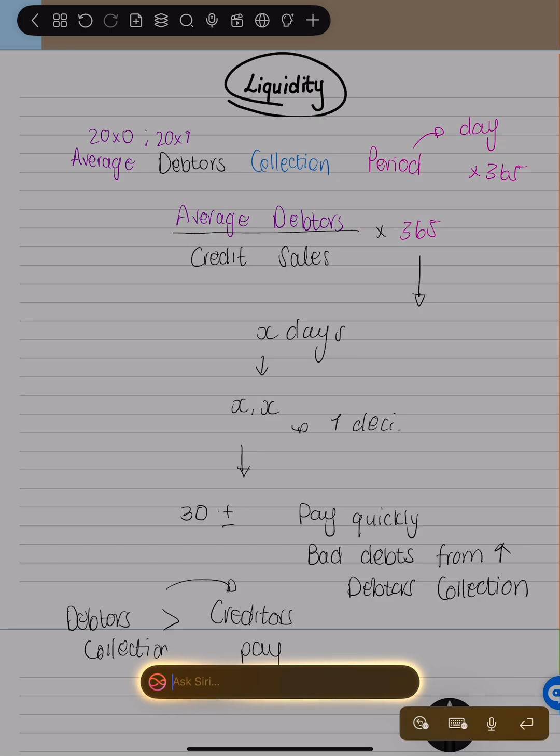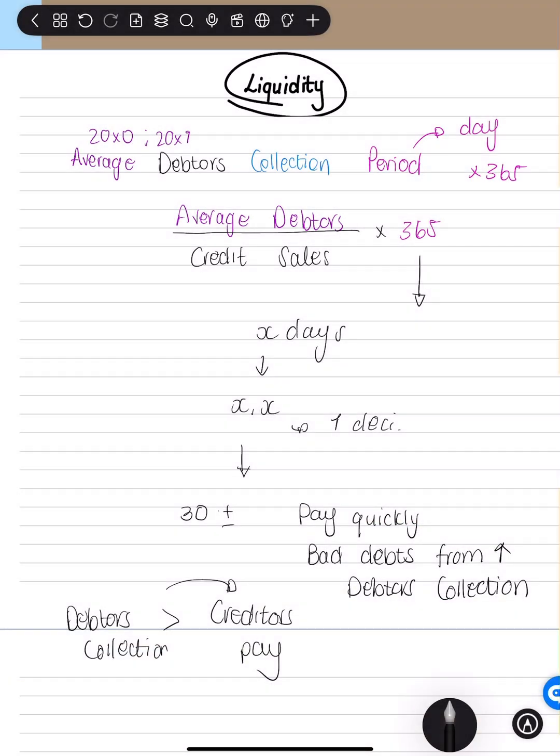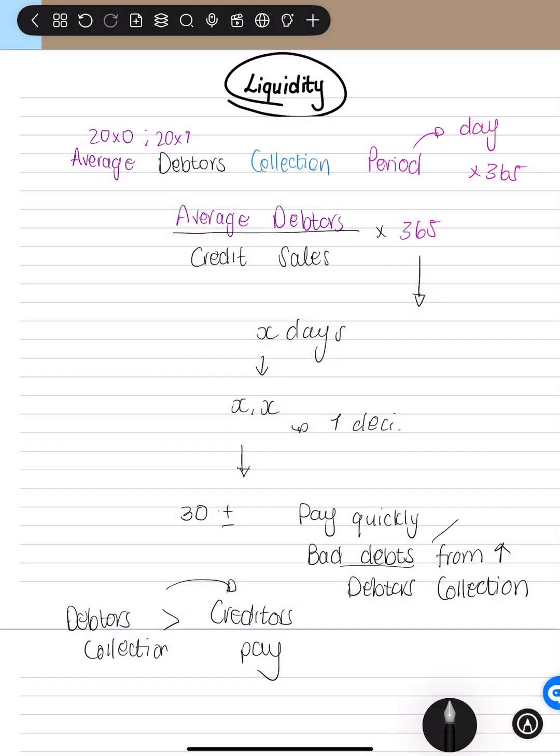And again, if you have bad debts, you're going to have things like legal fees. It just increases the cost. So you just want your debtors to pay quickly. An internal control measure to ensure people do know they still owe you money is to give them monthly statements with how much they owe you.